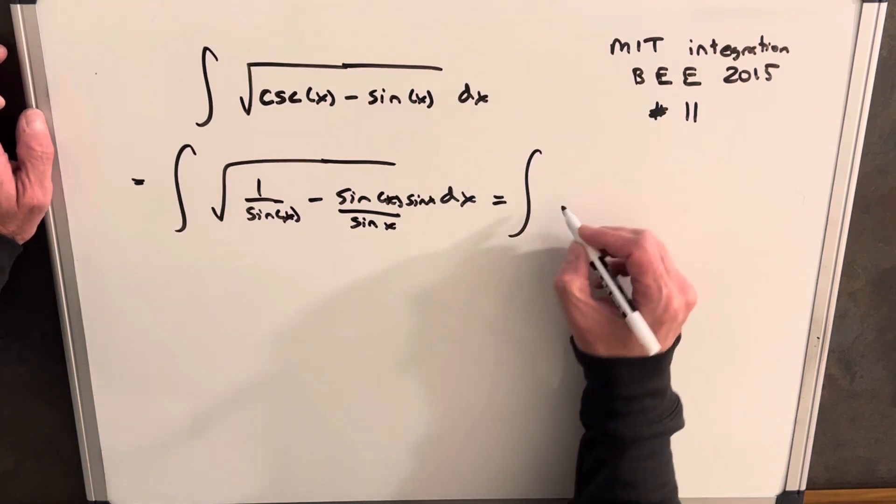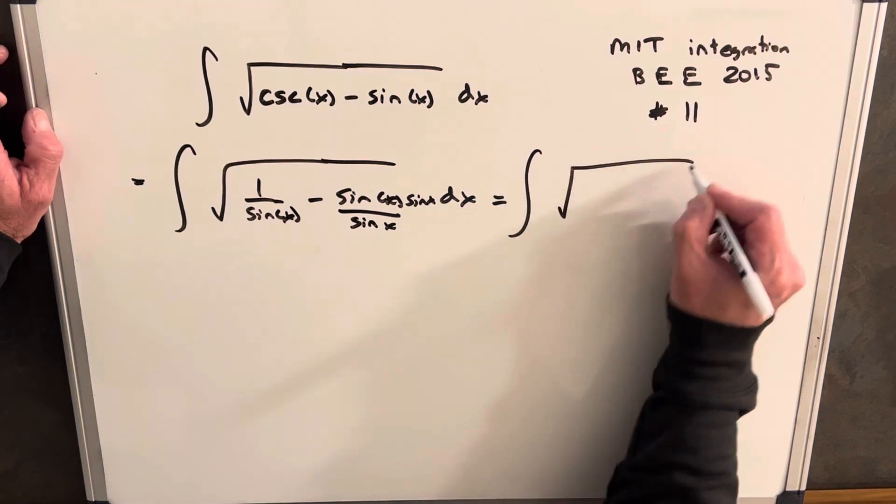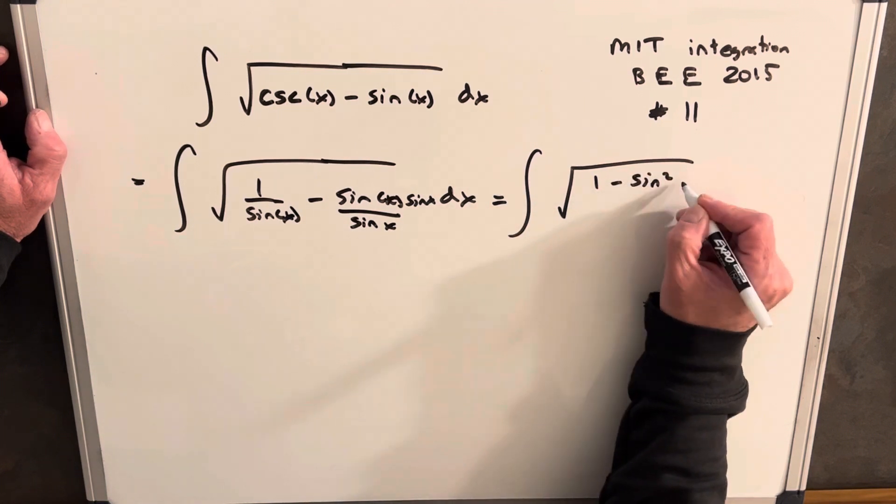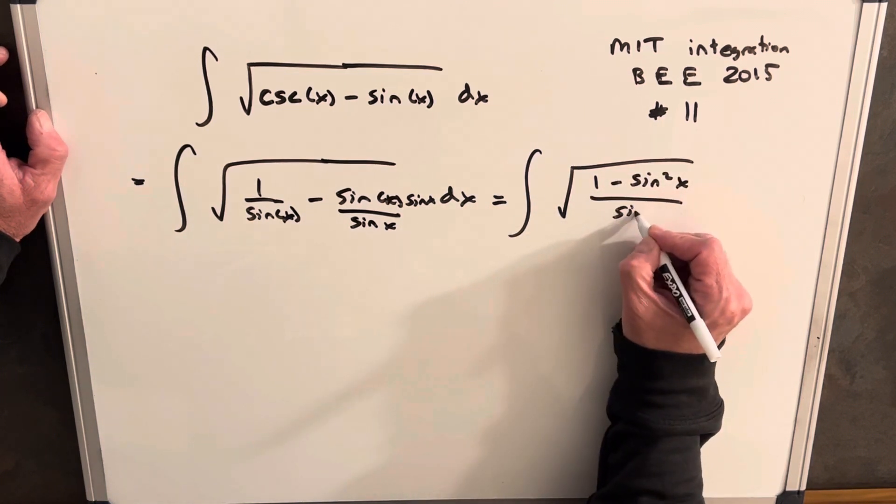So then we're going to have the integral on top. We're going to have 1. This is going to be sine squared x. So we're going to have 1 minus sine squared x all over sine x.